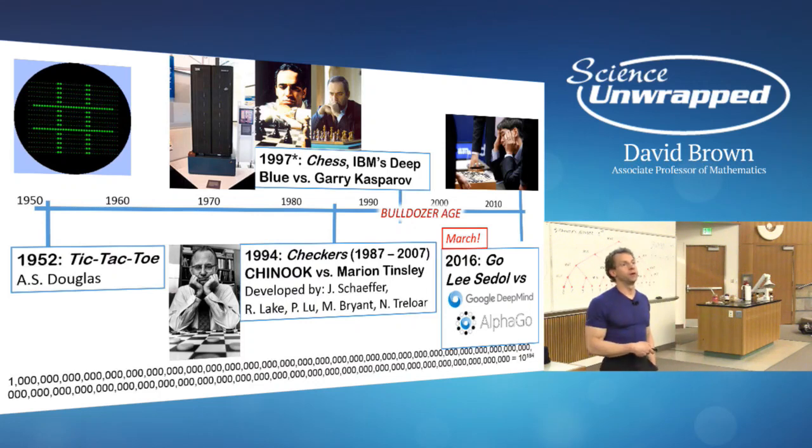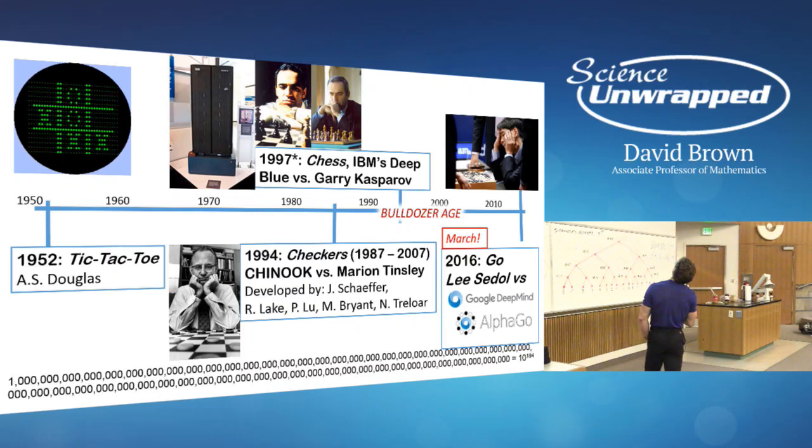Then Checkers was defeated. Three years after that, deep blue beat Kasparov. The computer basically pummeled Checkers with fast computations and looking far ahead faster than a human could play. No real intuition.